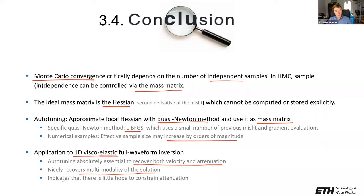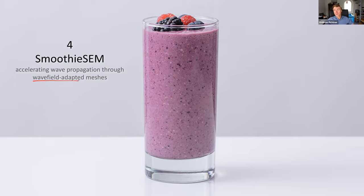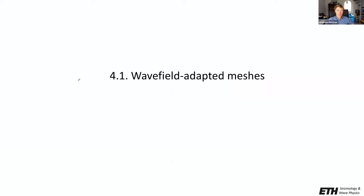From a geophysical perspective, even running full waveform inversion properly, there is little hope to actually constrain attenuation — the information content is too weak. This brings us to the last chapter, which has nothing to do with Monte Carlo sampling but with the solution of forward and adjoint wave propagation through the Earth — a method we call 'Smoothie SEM.' It is really all about accelerating wave propagation through the use of wavefield-adapted meshes.